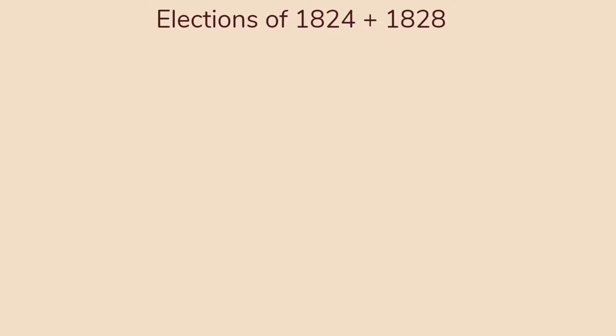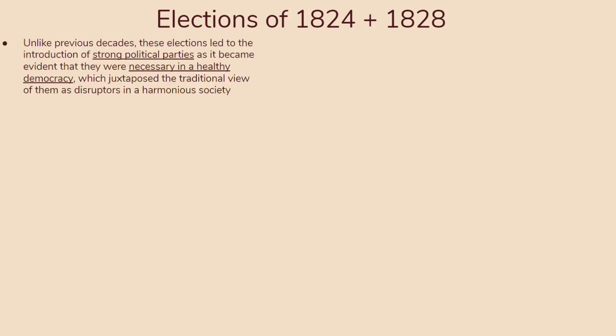To start off, let's talk about the elections of 1824 and 1828. These are super important, mostly because unlike the previous decades, these elections led to the introduction of strong political parties, as it became evident they were necessary in a healthy democracy. This contradicted the traditional view of them as disruptors in a harmonious society. People believed political parties would prevent unification of the country, which was critical given rising sectionalist tensions at the time.